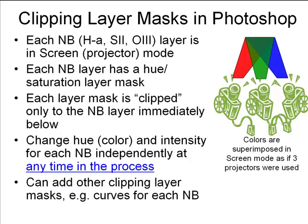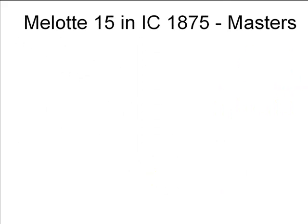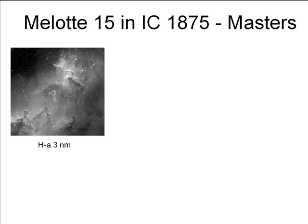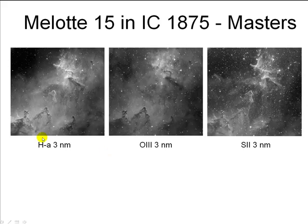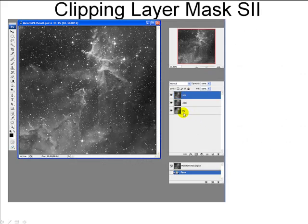You can also add other clipping layer masks — for example, you can add curves on top of the hue saturation color mask for S2 and boost up the red in the faint areas. We're going to use our three masters from Malat 15 in IC 1875: the three masters of HA, O3, and S2, all three-nanometer data taken on a 16-inch RC telescope. You'll form one file that has HA on the bottom, O3 on top of that, and S2 on top of that.